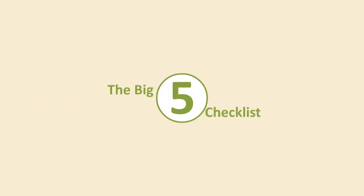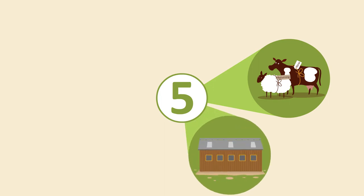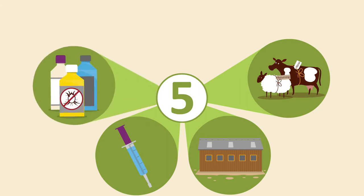When looking at diseases, a good place to start is the Biosecurity Big Five Checklist: livestock movement, quarantine, diagnostic tests and preventative vaccines, hygiene, and health plans.